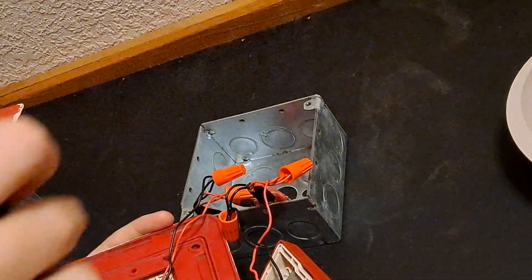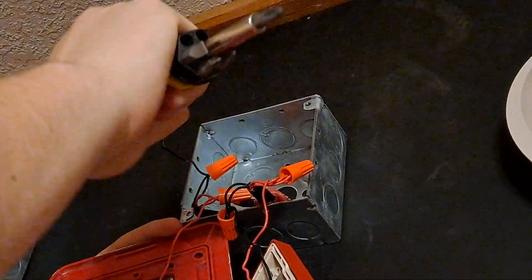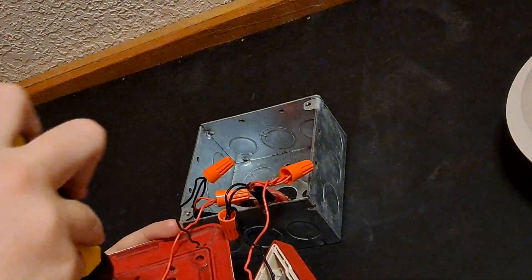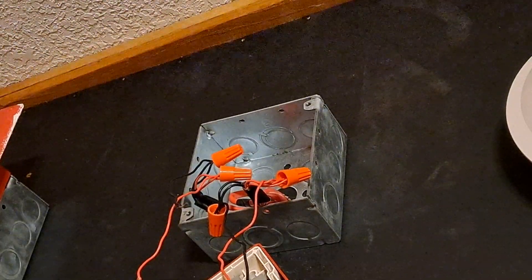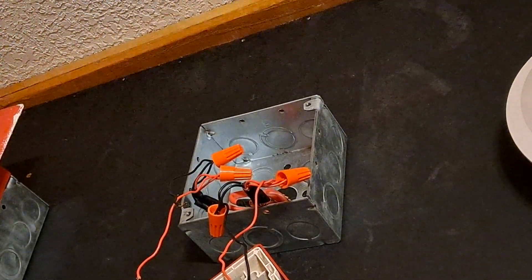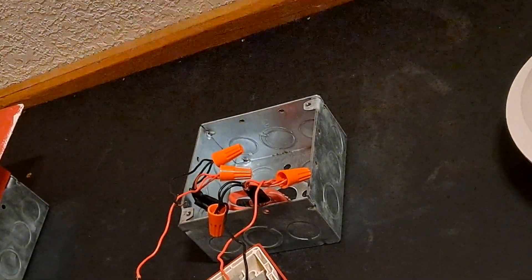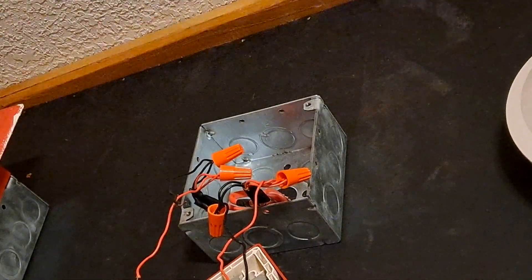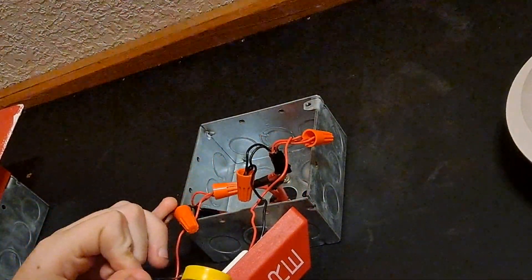So now we'll move back over to the Spectra Alert and take out the strobe wiring. Just like that our horn strobe is disconnected so I'll just set it down here. I'm trying to make sure my face doesn't get in the view, so I don't want that.